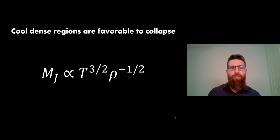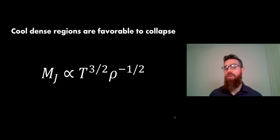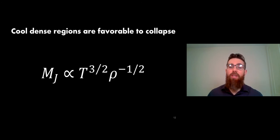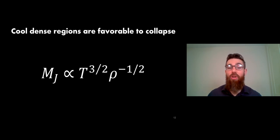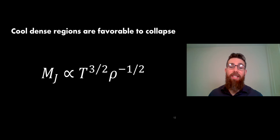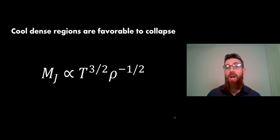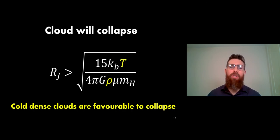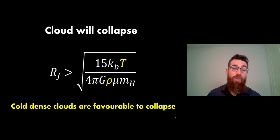What that actually tells you is that cool dense regions are favourable to collapse. If the Jeans mass is proportional to temperature to the power of 3/2 and density to the power of −1/2, then as temperature increases we need a larger Jeans mass for collapse, and as density increases the Jeans mass decreases. So cool dense regions are going to be favourable to collapse - the same is true if you look at the radius as well.